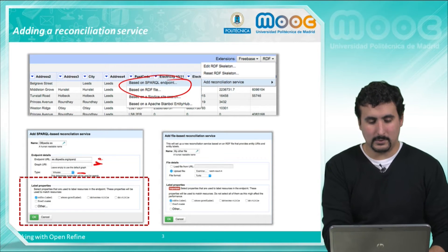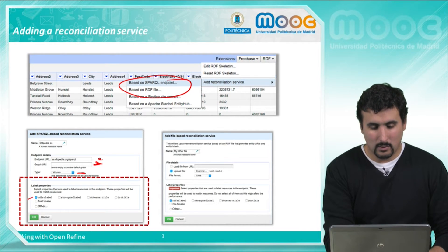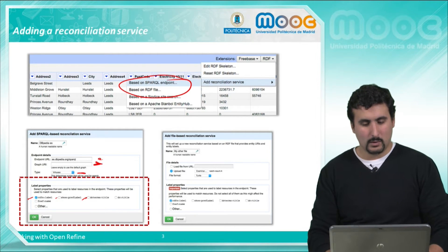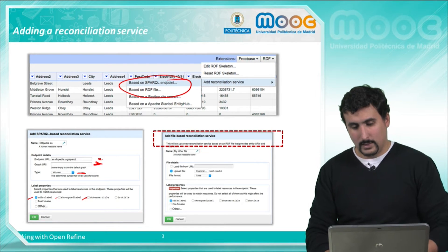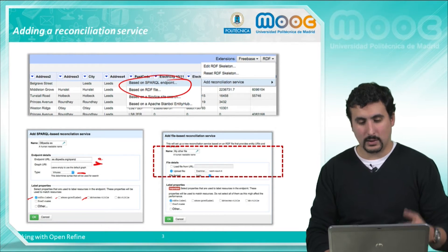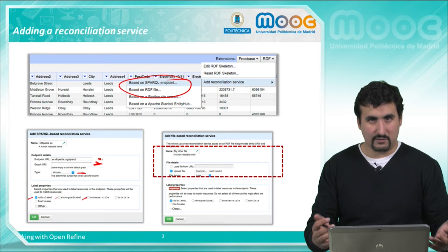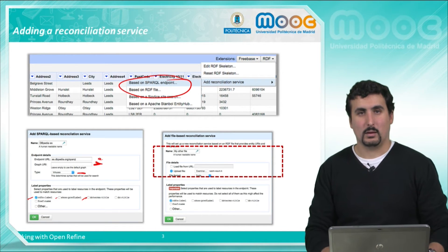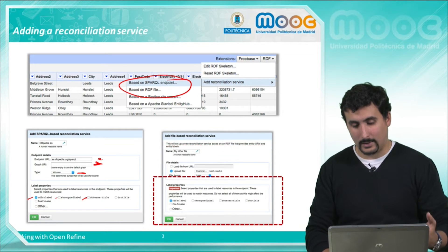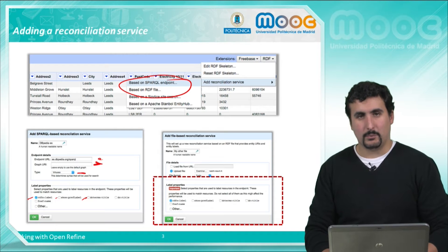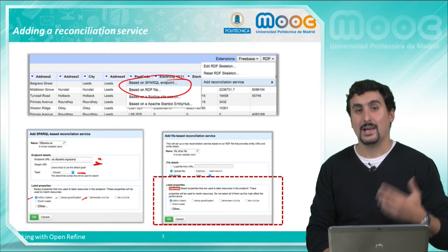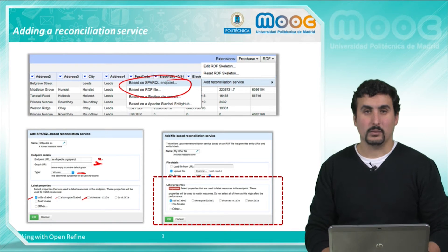We have properties such as RDFS label or SKOS prefLabel, or DC terms title. In the case of a file-based reconciliation service, we have to introduce the file itself — the path on our computer that contains the triples — and again the properties, such as RDFS label or DC terms, that we want to use to carry out the matching process.